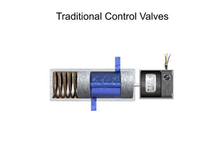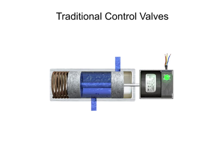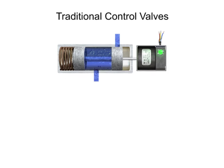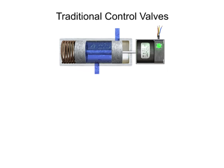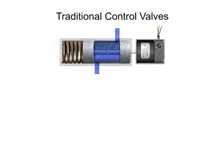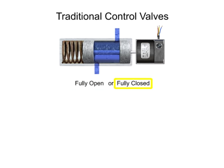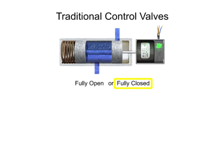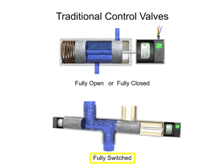Traditional control valves are the most basic type. The flow control of a traditional control valve is typically limited to fully open, fully closed, or fully switched to a new flow path.